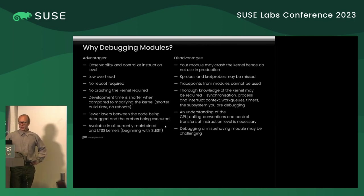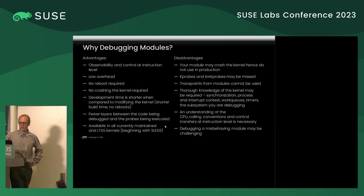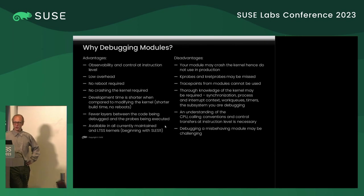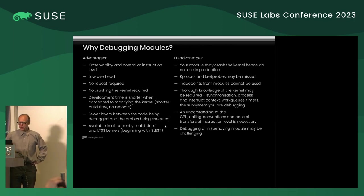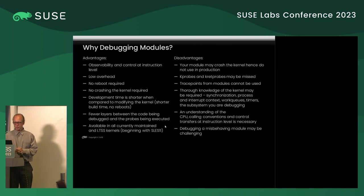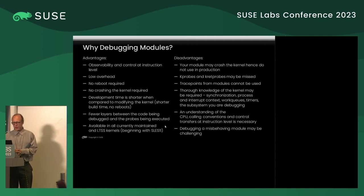So I've demonstrated the low overhead of debugging modules. I should also emphasize that they provide unprecedented observability and control at instruction level — and I'd like to emphasize the word 'control': you can change the behavior of the kernel. No reboot is required to load the module, you do not need to crash the kernel to get data, the development time is shorter, it's easier and faster to compile a module, and there are fewer layers between the code you're trying to debug and the probes. You can write a debugging module for pretty much everything, including SLES 11.